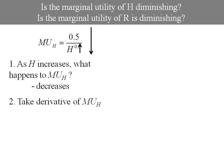A more formal way of checking would be to take the derivative of the marginal utility of H with respect to H and see that it's negative.